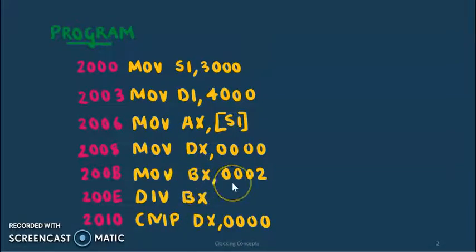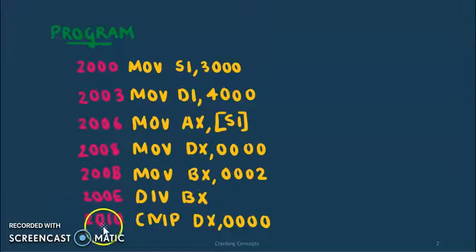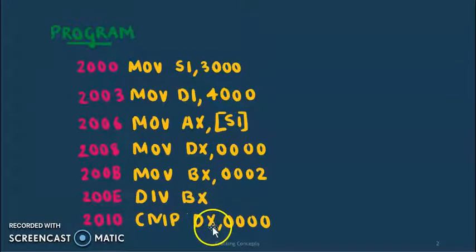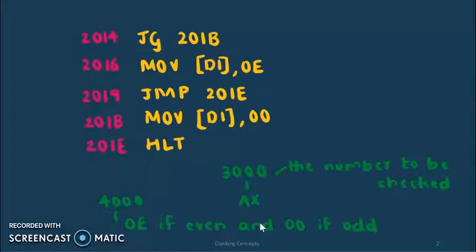On division, the quotient will be stored in the register AX and the remainder in DX. When we divide a number by 2, if the remainder is 0 it means the number is even, else it is odd. This is a 2-byte instruction so the next line of code is at 2010, where we'll compare the value of DX and 0.